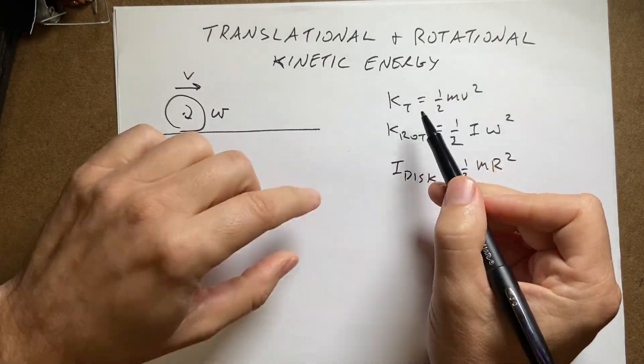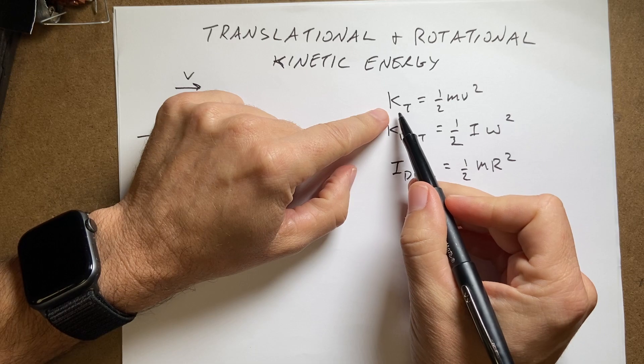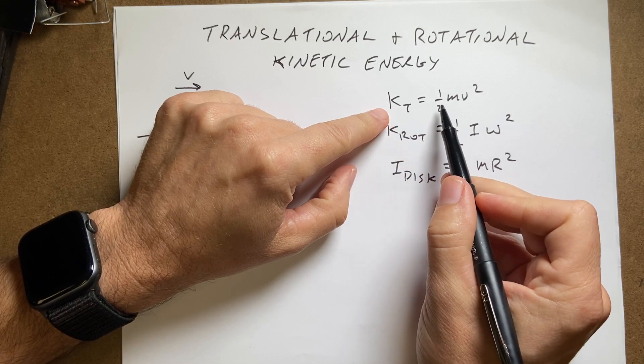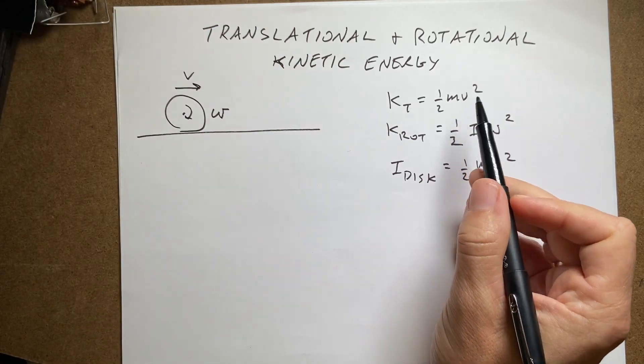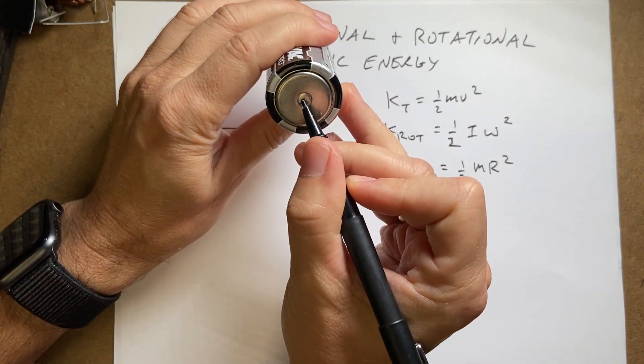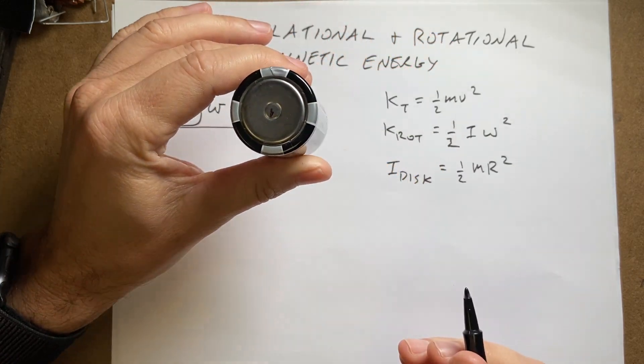So the first thing is my definition of translational kinetic energy. The translational kinetic energy is one half times the mass of the object times the velocity of the center of mass. So this is the center. It's rolling but the center is moving.